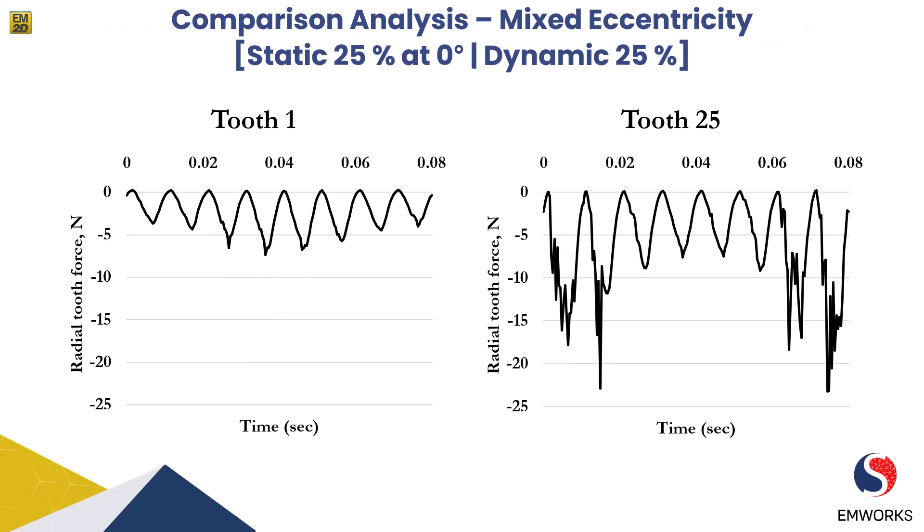Finally, under mixed eccentricity conditions — with the rotor shifted by a combination of 25% static and 25% dynamic eccentricity — the radial forces on stator tooth one and tooth 25 still vary as the rotor moves. Similarly to the dynamic eccentricity scenario, there will be instances where the rotor is closest to tooth one and others where it is closest to tooth 25. The mixed eccentricity condition combines the effects of static and dynamic eccentricities, leading to complex variations in the air gap and magnetic field interactions, and the radial forces on the stator teeth will exhibit different magnitudes based on the specific position and movement of the rotor.